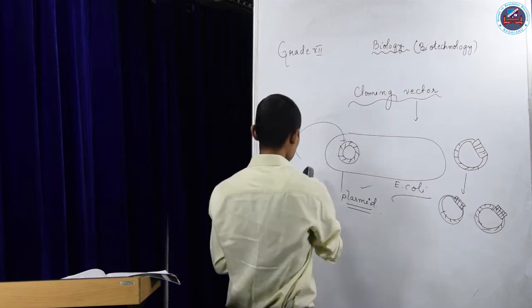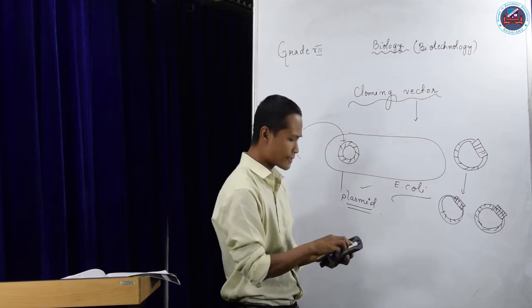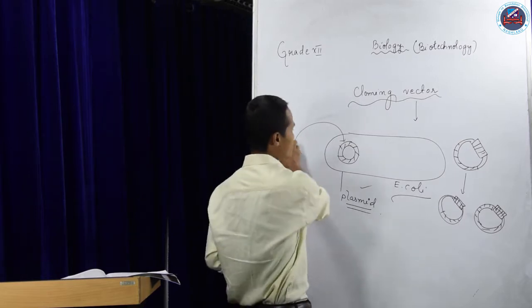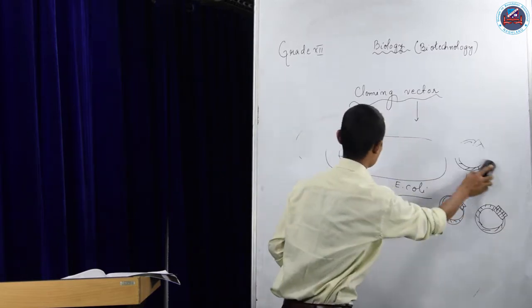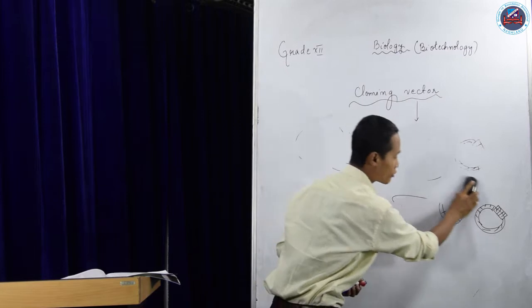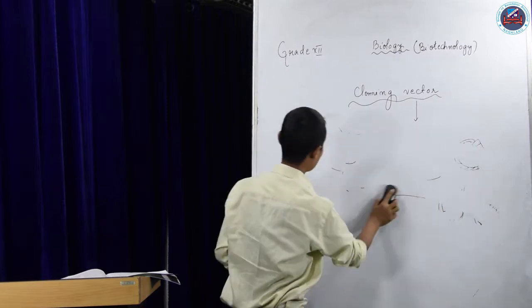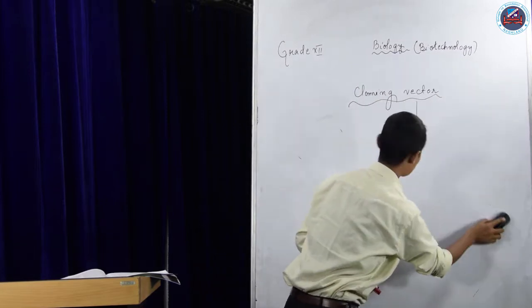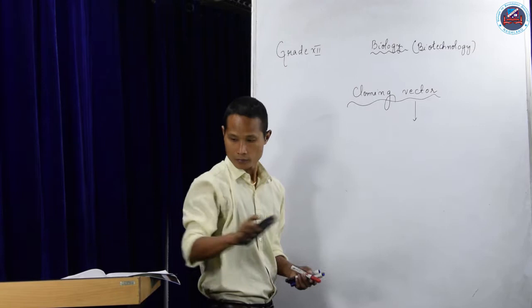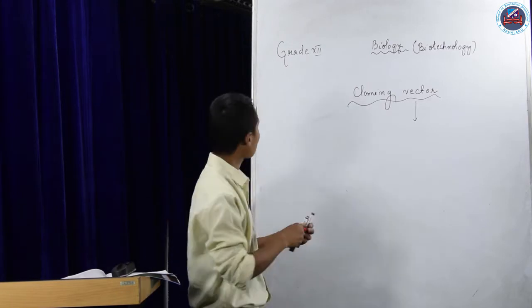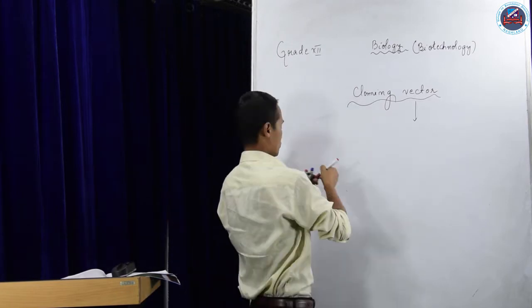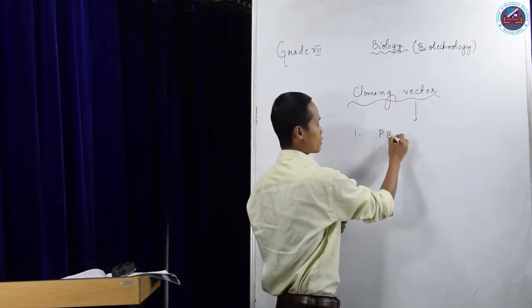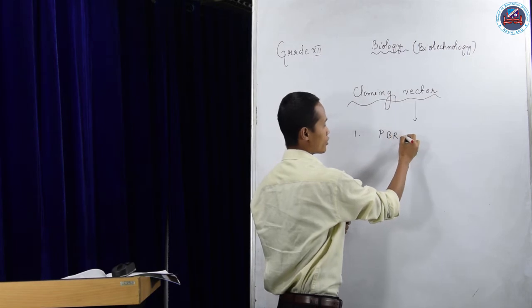We have to understand there are so many vectors. Some of the common vectors: like PBR322. One of the common plasmids is PBR322.